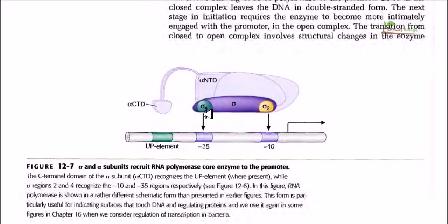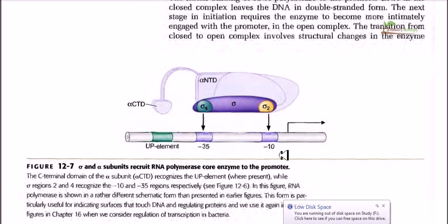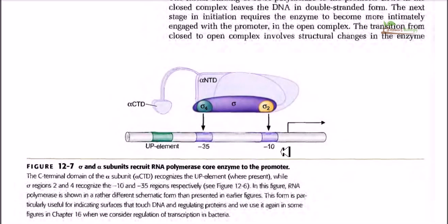The binding of sigma 2 and sigma 4 with the minus 10 and minus 35 promoter sequences triggers the DNA to engage with the active site cleft of the beta subunit. Right after this attachment and formation of what is called the open complex, transcription of the DNA begins from nucleotide position plus 1.